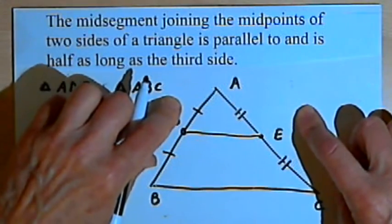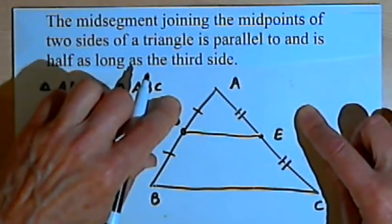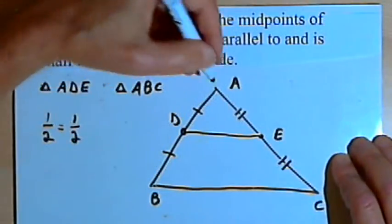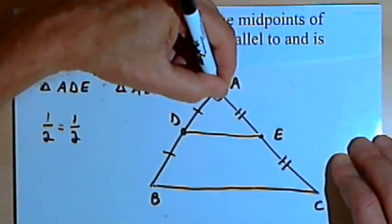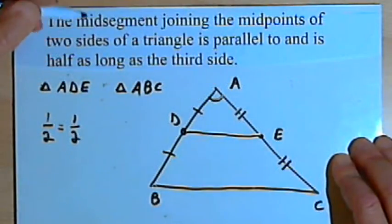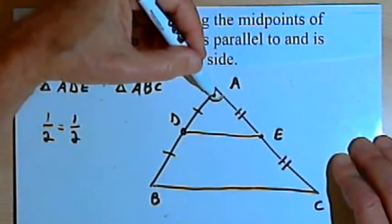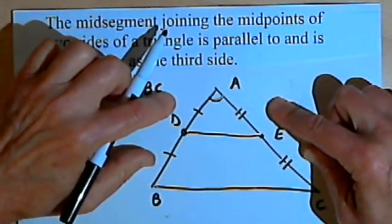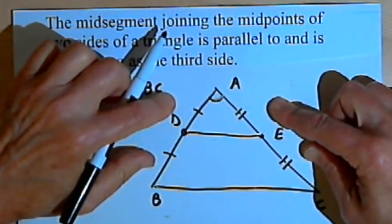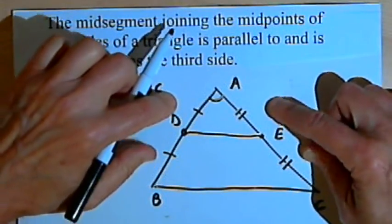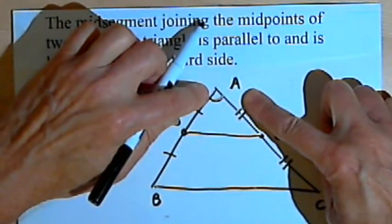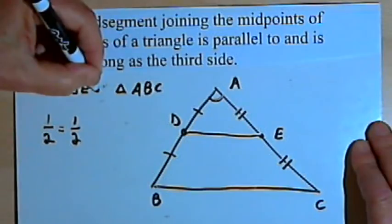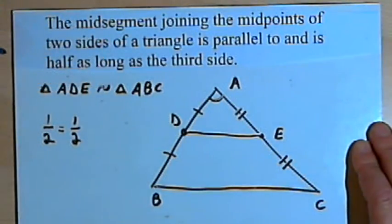The only other thing I have to do is show that I have two included angles that are congruent. My included angles are going to be angle A and angle A, because both triangles share angle A. So I've got two pairs of sides that are proportional and a pair of included angles — angle A and angle A — that are congruent. Therefore I've got two similar triangles.